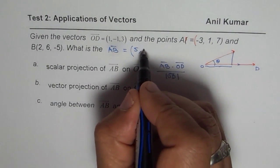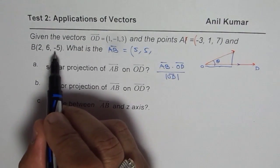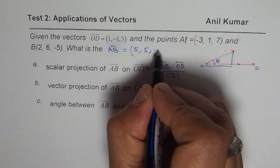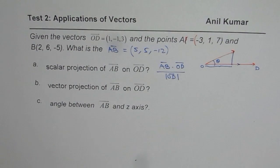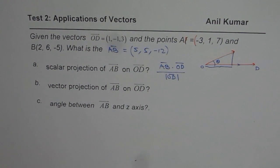6 minus 1 is 5 again. And then -5 minus 7 will be -12. So we get vector AB as (5, 5, -12).